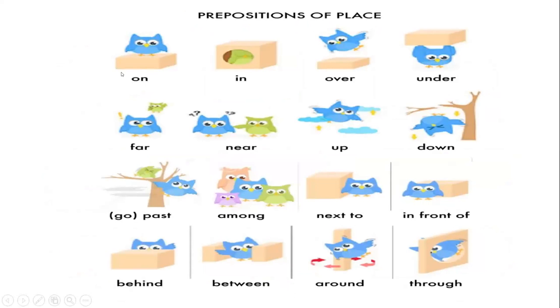Here with a bird, we have the same but with a little bird. The bird is on the box. The green bird is in the box. The blue bird is over the box. The blue bird is under the box. The green bird is far from the blue bird. The green bird is near the blue bird. The blue bird is up. The blue bird is down. The blue bird goes past the tree. The blue bird is among the other birds. The blue bird is next to the box. The blue bird is in front of the box. The blue bird is behind the box. The blue bird is between the boxes. The blue bird is around the box. The blue bird is through the box.